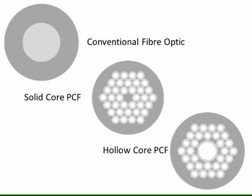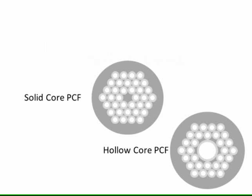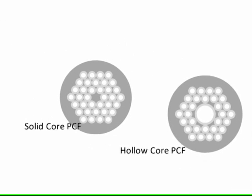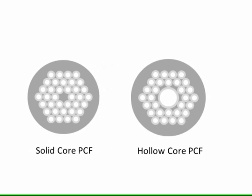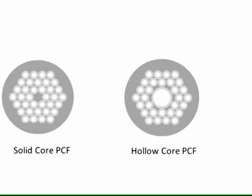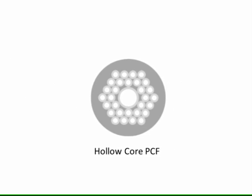The core of the fibre is formed either by solid silica or by a large air hole depending on the type of fibre you are making. Here in this experiment we are using our hollow core fibre so we have a large air hole as our core.